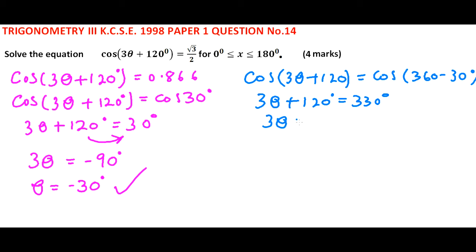We have 3θ equals, take 120 to the other side which becomes minus, equals 210. Therefore θ equals, divide by 3, you get 70 degrees.